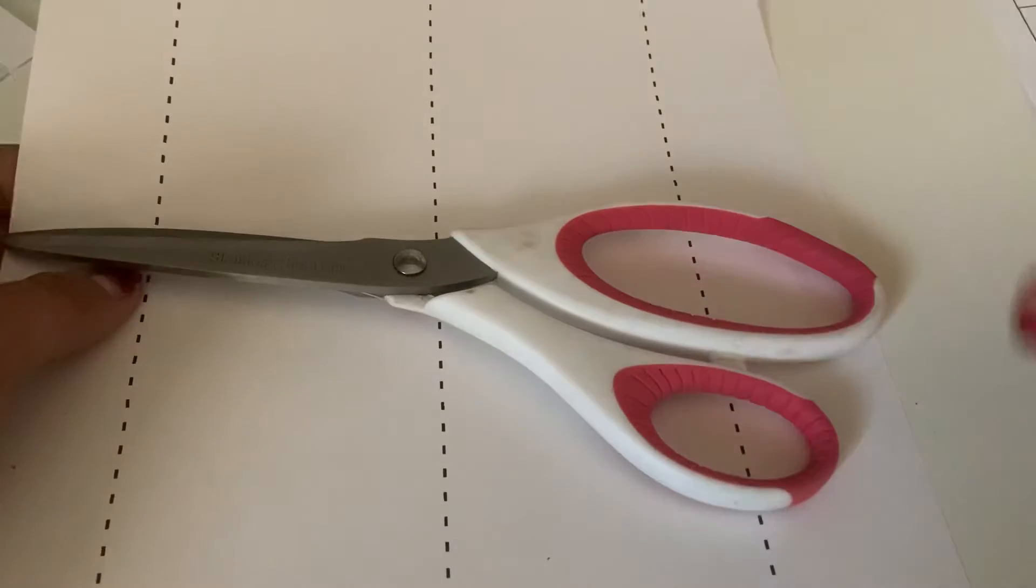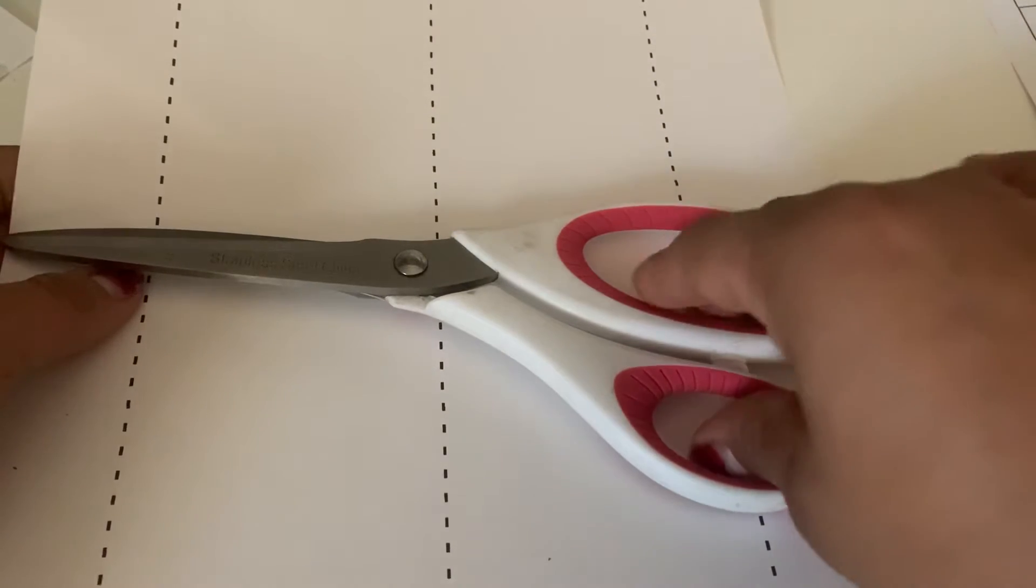So you have your scissors down, you're going to put your finger, your thumb in and your fingers and then you're just going to flip it.